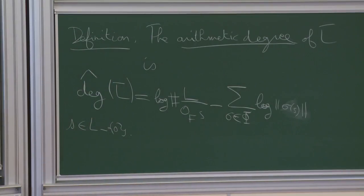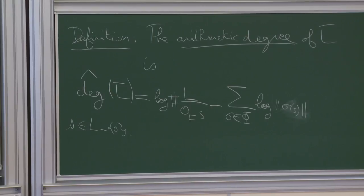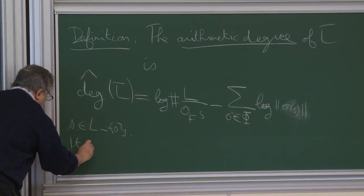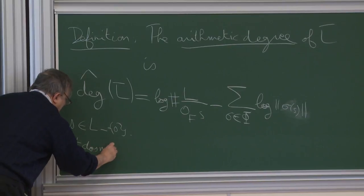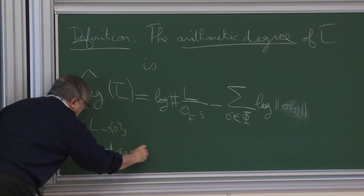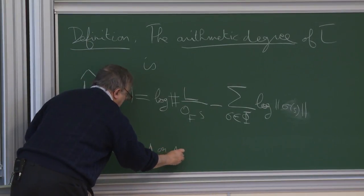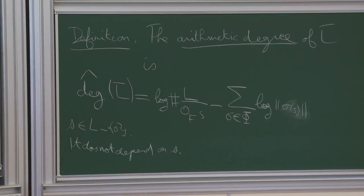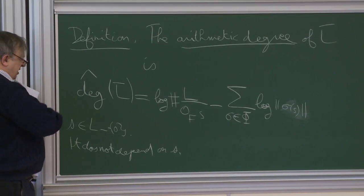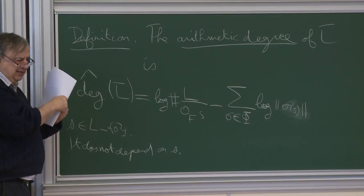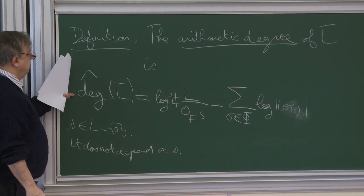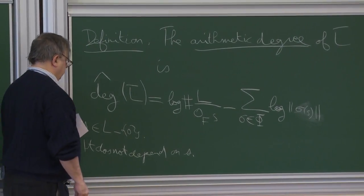S is a section of L, so it gives a section on L_C for any complex embedding, and we have this norm. So we subtract log of the norm. This looks like it depends on S — in fact, it does not. It does not depend on S; this is by the product formula. If you change from S to S-prime, S-prime will be a multiple of S by some function, and the degree of the function will be zero by the product formula.